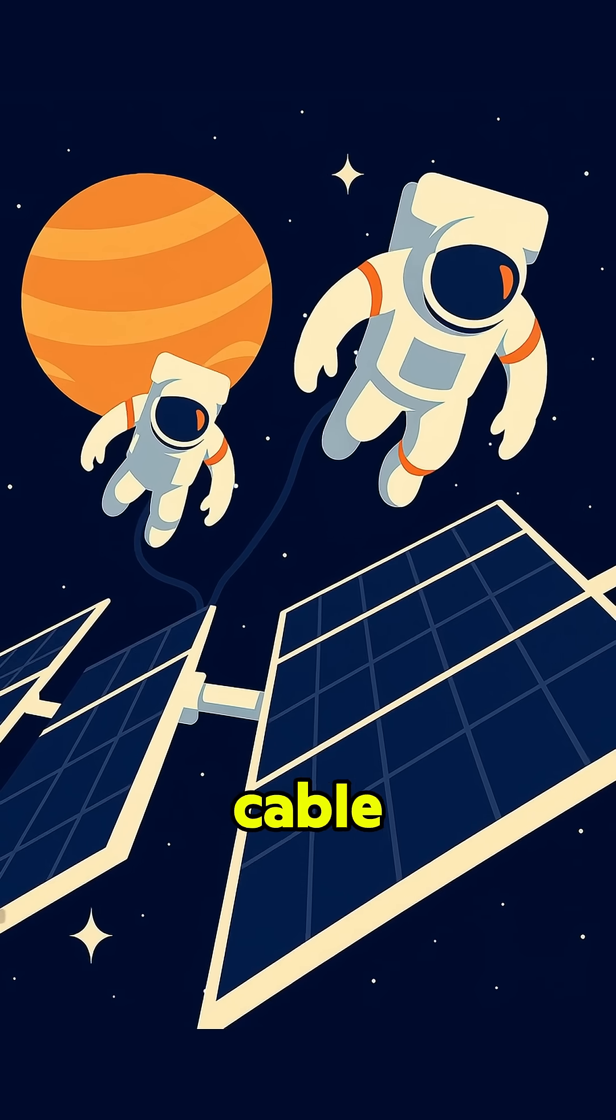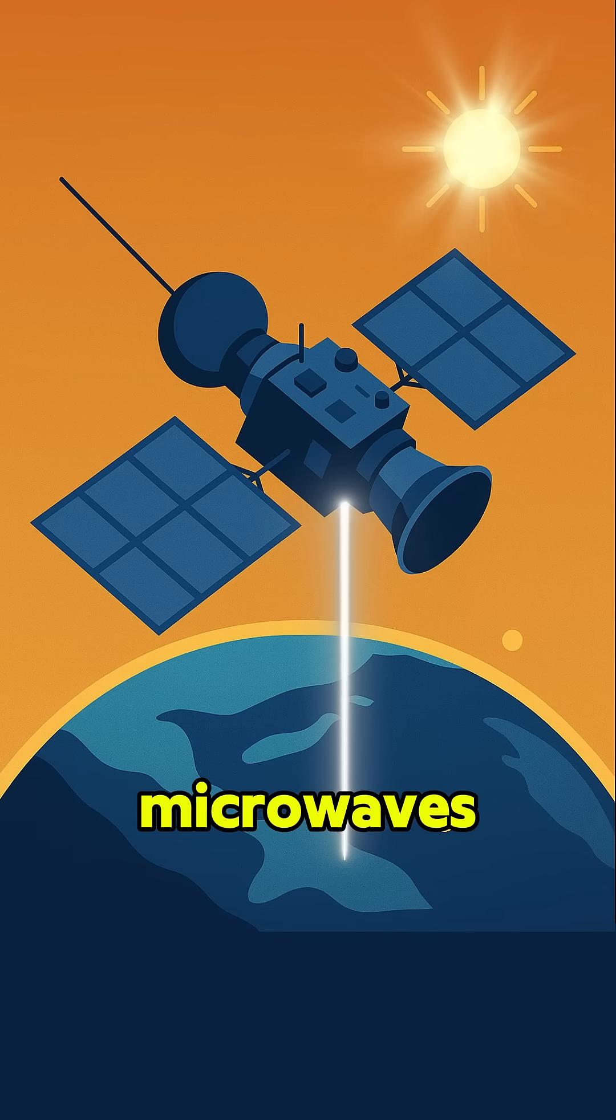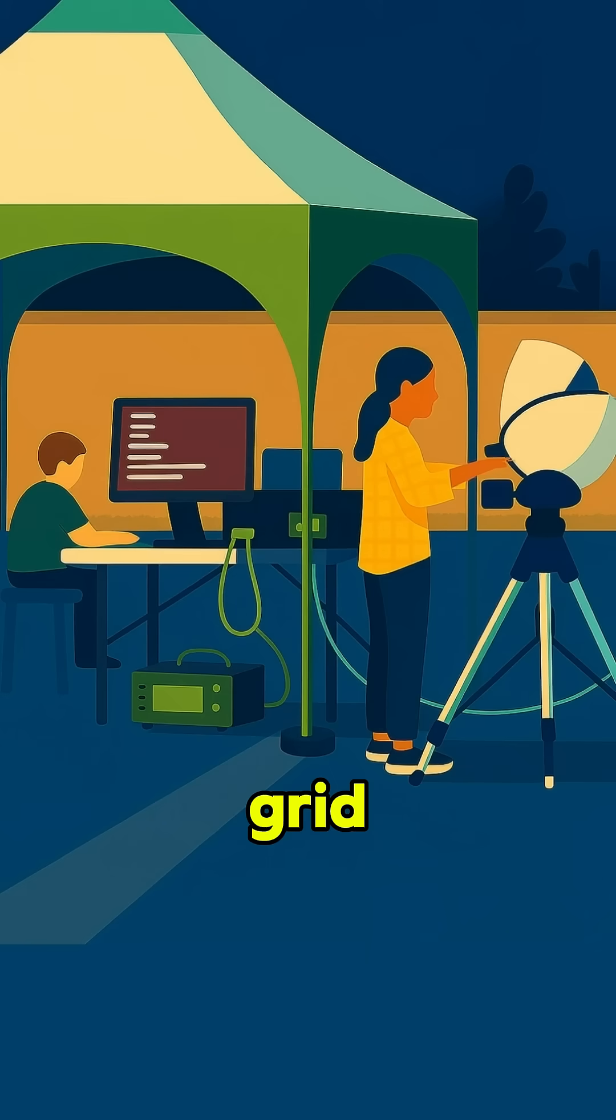Here's how it works. You can't run a cable from space, so satellites convert the electricity they collect into microwaves and beam it toward Earth. On the ground, thin panels called rectennas pick up the signal. Basically, just like solar panels turn light into electricity, rectennas turn radio waves into electricity. That power can then be stored in batteries or fed straight into the grid.